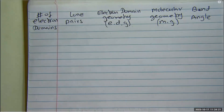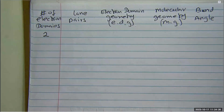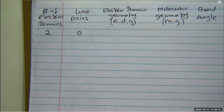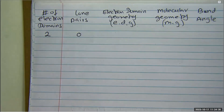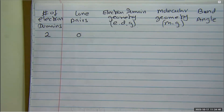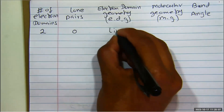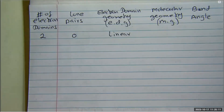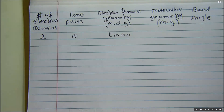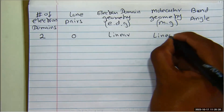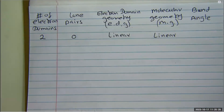Let's think about carbon dioxide — we had two electron domains around the central atom, and zero lone pairs. Think of electron domains as balloons. If you hold two balloons in one hand, to be far apart from each other, they will arrange in a linear shape, meaning each balloon will be 180 degrees apart. That geometry is called linear geometry. Because all my electron domains are bonding electron domains, my molecular geometry is also linear. And the bond angle would be 180 degrees.